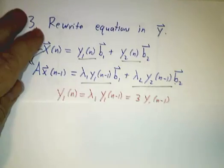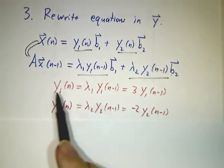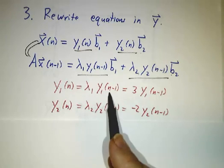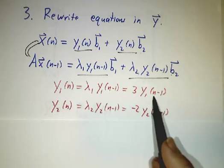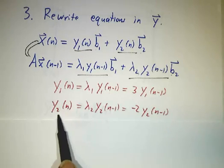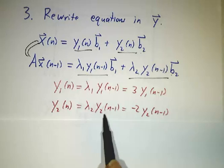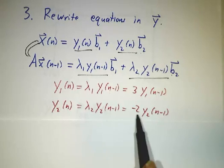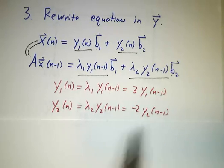So, we get our new equations, which is that y1 at time n is lambda 1 times y1 at time n minus 1. And in this example, lambda 1 is 3, so that's 3y1 of n minus 1. And y2 is lambda 2 times y2 yesterday, so that's minus 2 times what we had before.